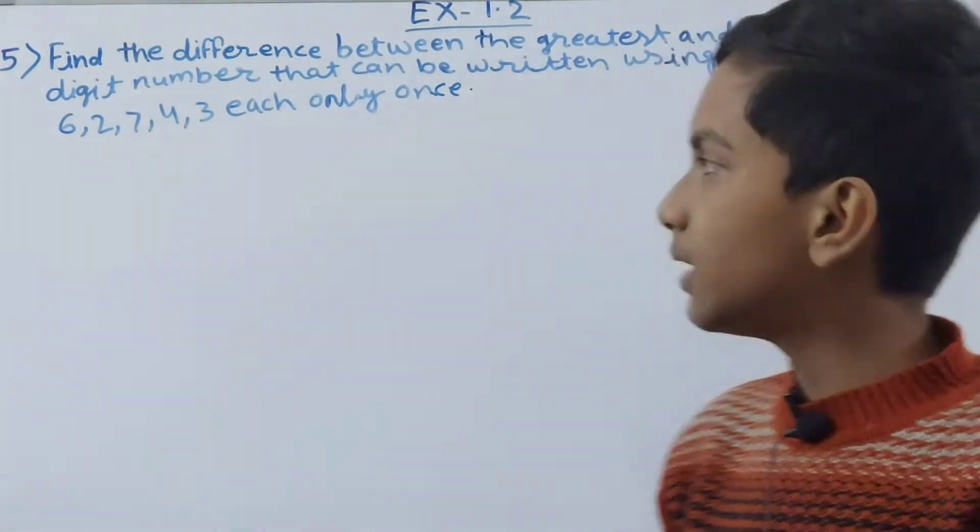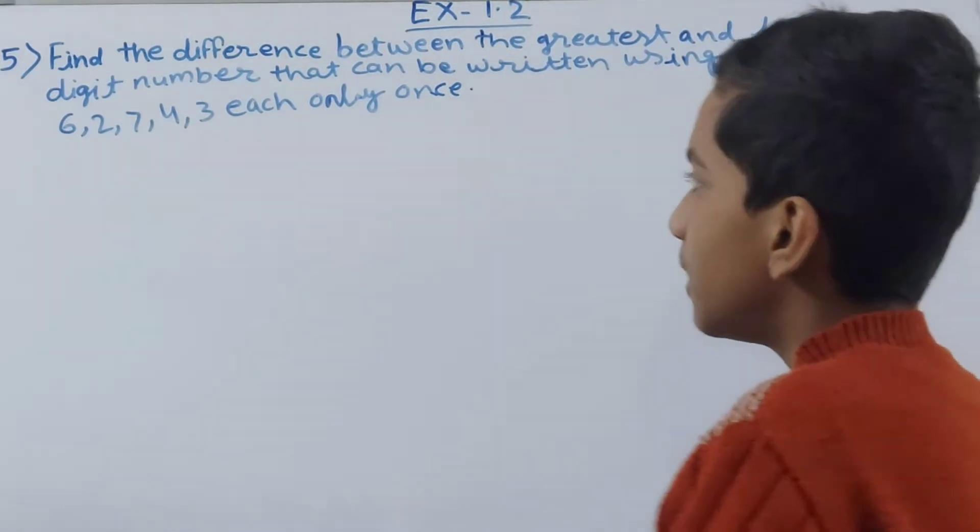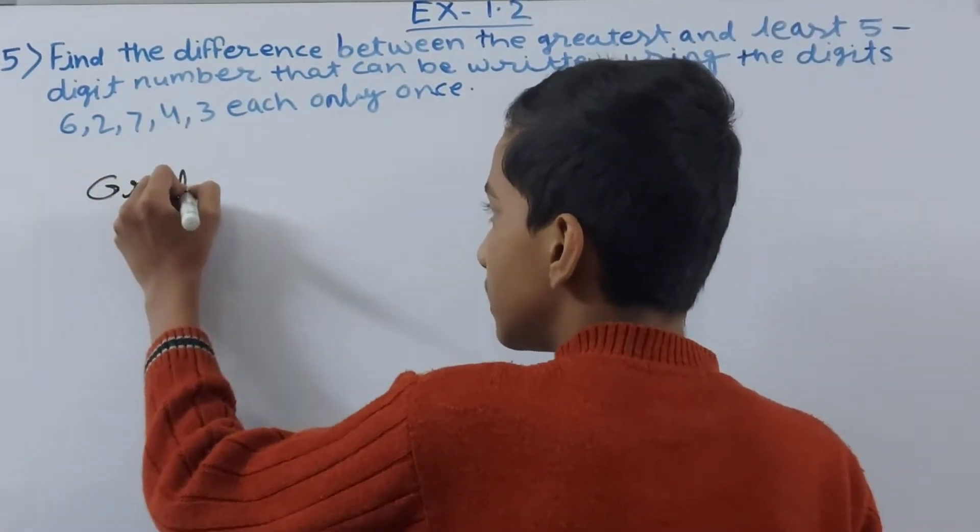So first of all we need to make the numbers with these five digits. Let's start. We are first going to make the greatest number.